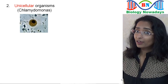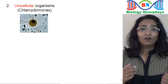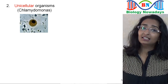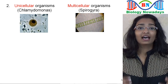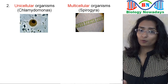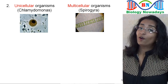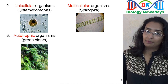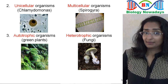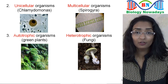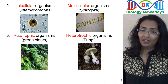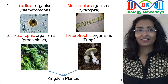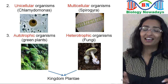Also, unicellular organisms — those having only one cell, like Chlamydomonas — and multicellular organisms — those having many cells, like Spirogyra — were grouped together. Similarly, autotrophic organisms that can prepare their own food, such as green plants, and heterotrophic organisms that cannot prepare their own food, such as fungi, were all grouped together in kingdom Plantae simply because their cells had a cell wall.